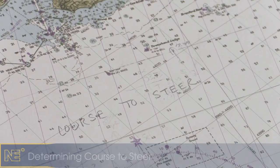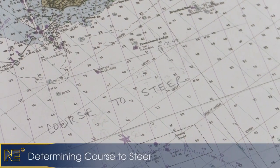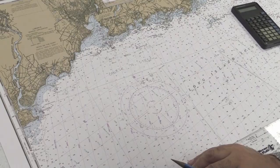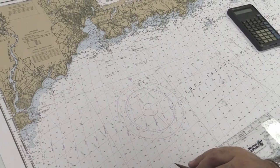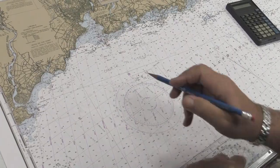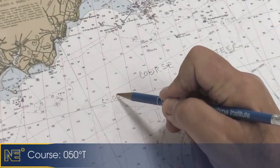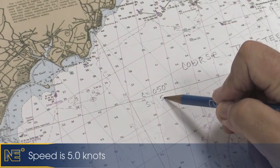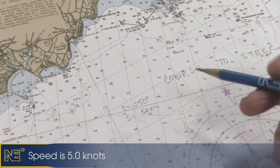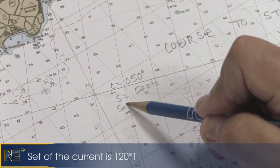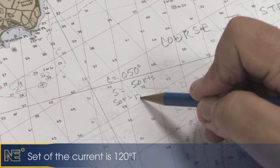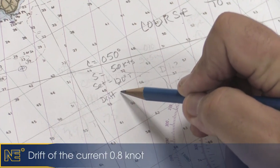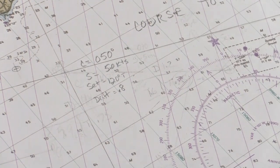Course to steer: if we know what the set and drift are, then we can steer a course that takes those into consideration and work the set and drift to our advantage. For this discussion, we'll assume a course of 050 degrees true, vessel speed of five knots, set of the current at 120 degrees true, and drift of 0.8 knots.